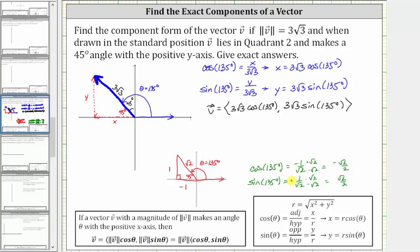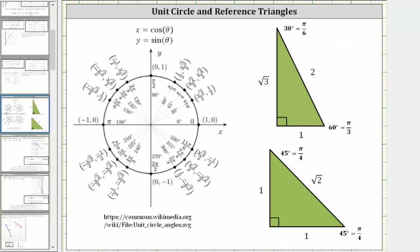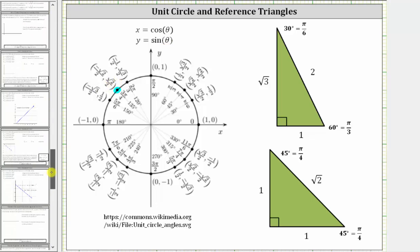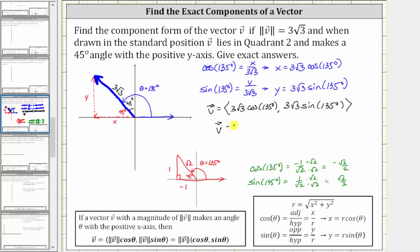Let's also verify these using the unit circle. 135 degrees intersects the unit circle at a point where x equals cosine theta and y equals sine theta. Cosine 135 degrees is negative square root two divided by two, and sine 135 degrees is square root two divided by two. This means vector v has an x component of three square root three times negative square root two divided by two, and a y component of three square root three times positive square root two divided by two.